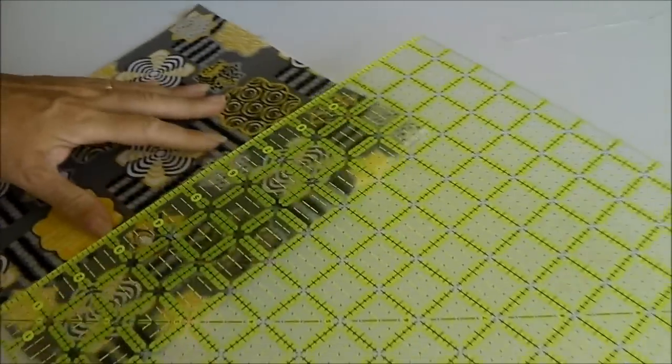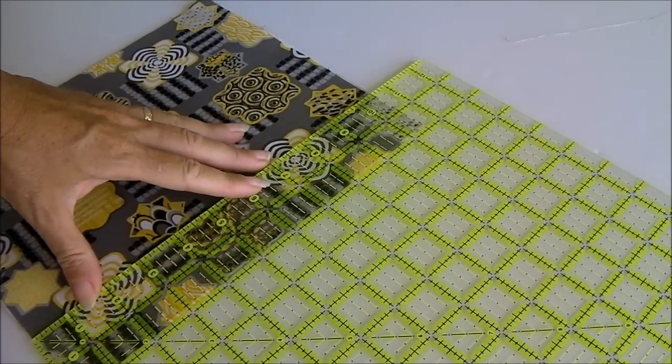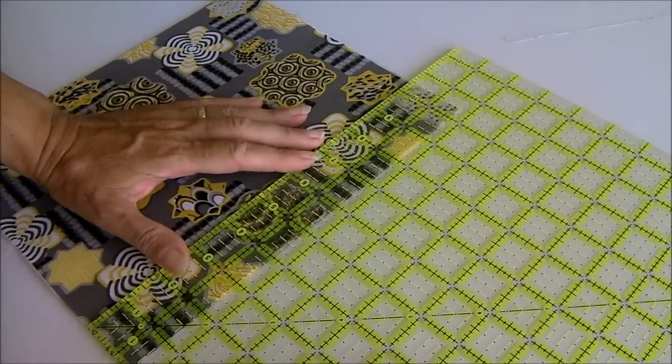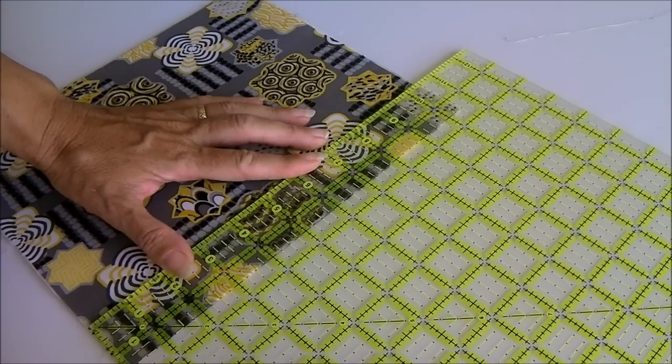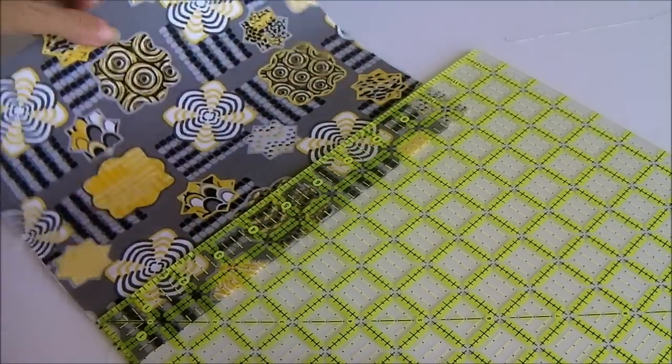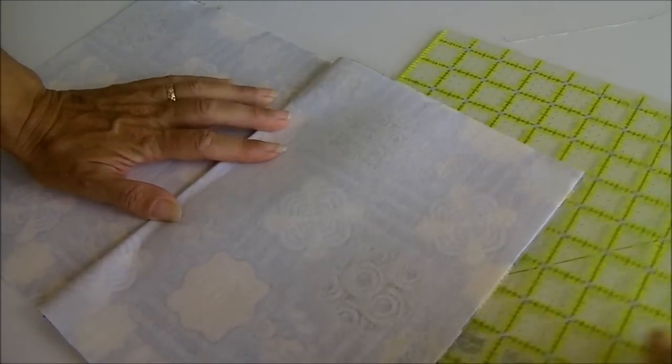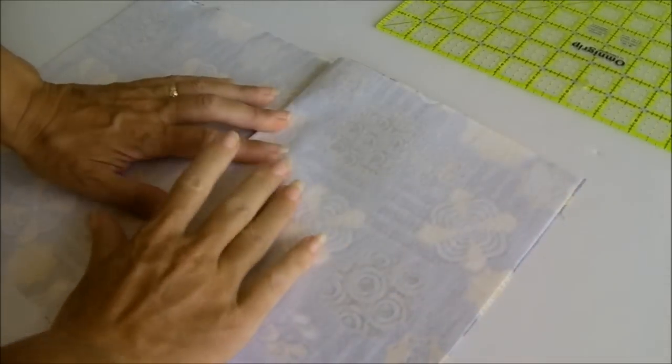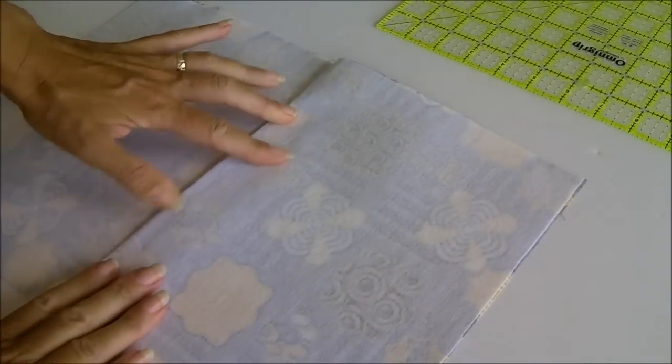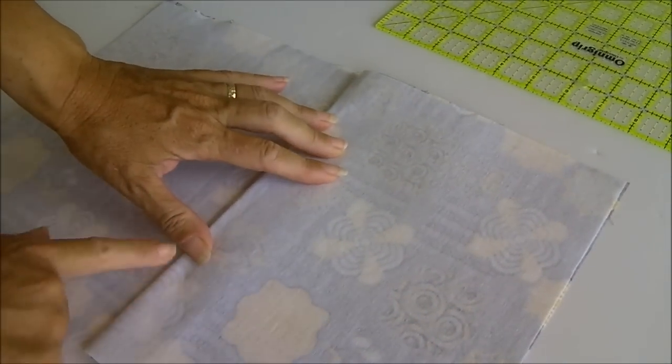So that will be our bottom seam and then if you take the ruler again we're going to use our three inch bottom so I'm going to do one and a half inches on either side so I'm going to mark up with my one and a half inch line and then fold the fabric over slide out my ruler make sure it's square.